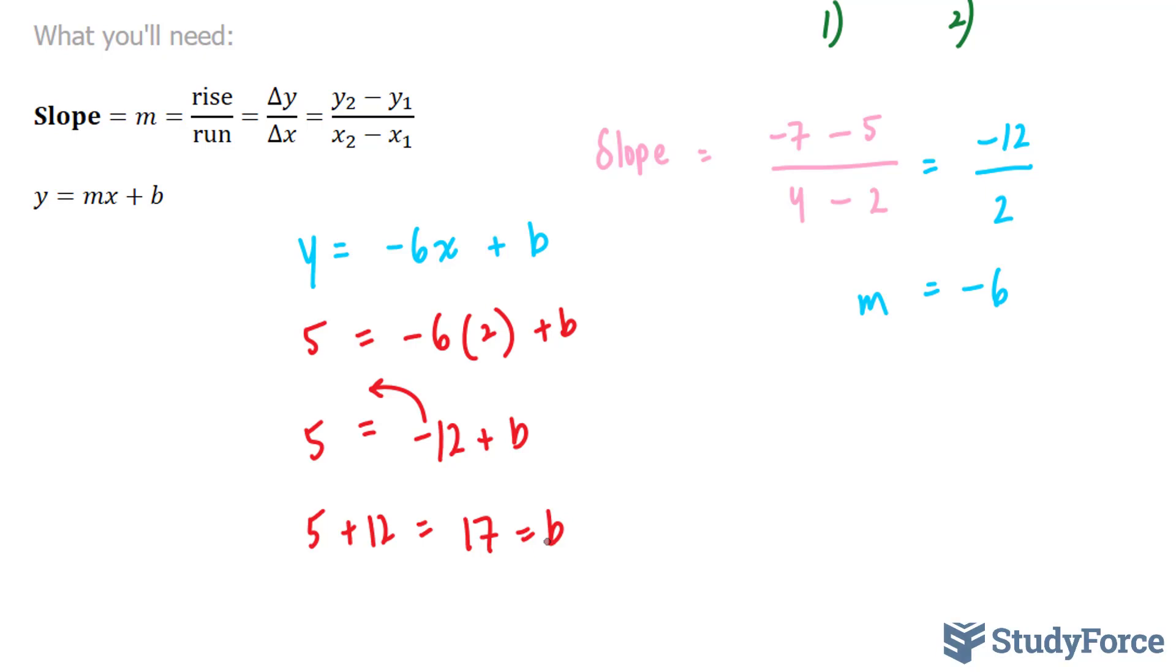Lastly, what we do is bring together everything that you found, which in our case is m and b, and plug them into y equals mx plus b. This m represents negative 6x, and this b represents 17. y equals negative 6x plus 17.